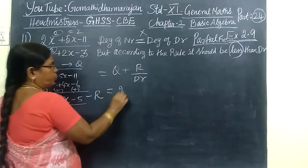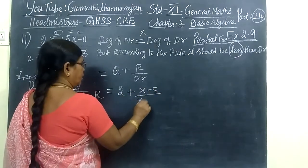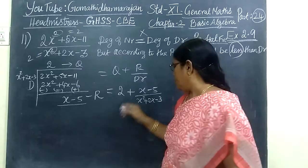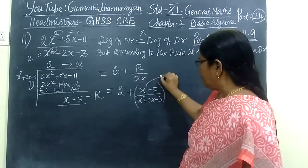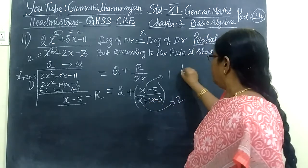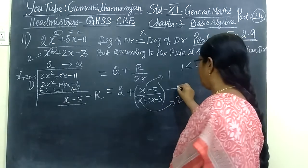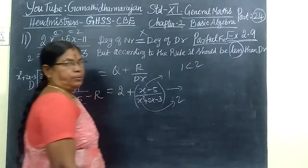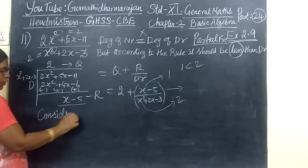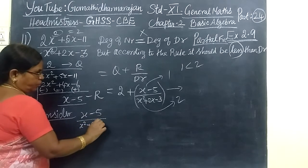So what is the quotient? 2. So 2 plus X minus 5 by X² plus 2X minus 3. If you see, if you consider this only, here the degree of the numerator is 1 and the degree of the denominator is 2. So degree of numerator less than degree of denominator. So that you can use partial fraction method. You consider only this part.